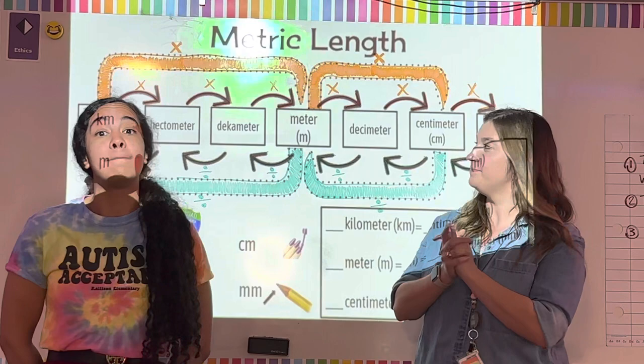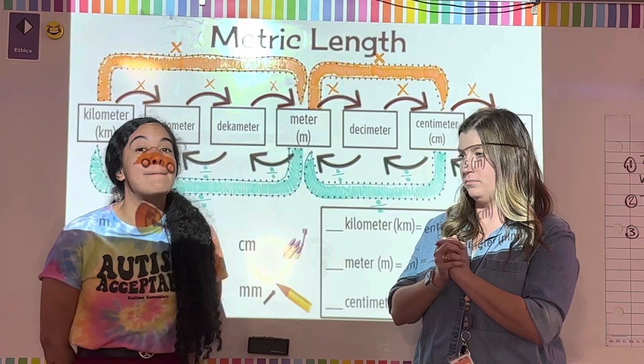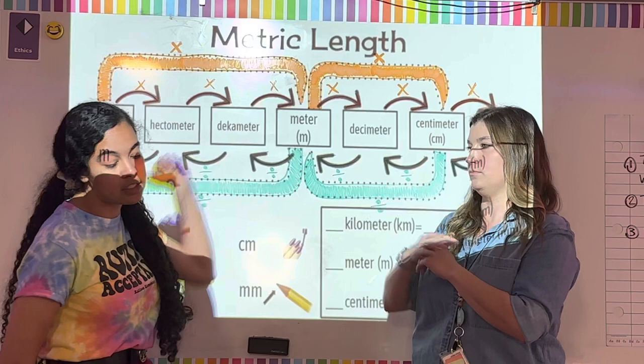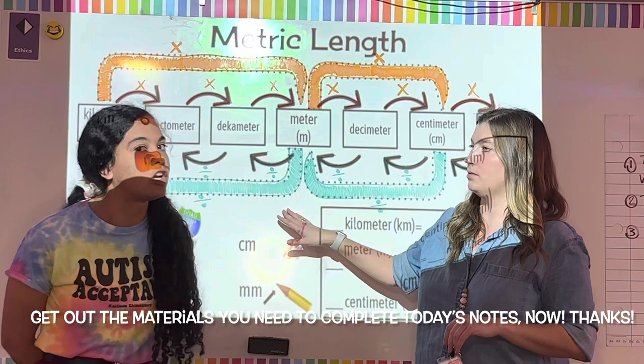We're going to go ahead and get started on metric conversions this week, and the very first lesson is going to be metric length. Make sure you have out the notes that say metric length at the top. Cut them out, glue them in your journal, get all your materials, and then pause.